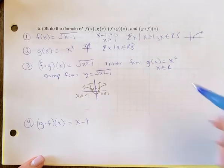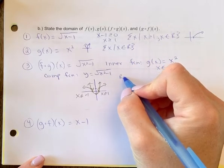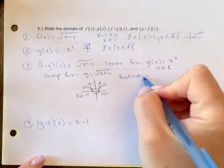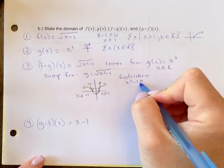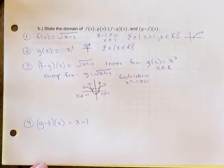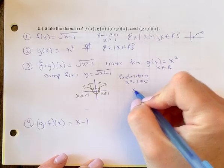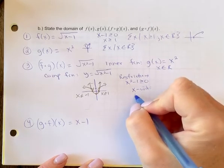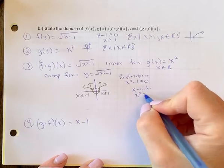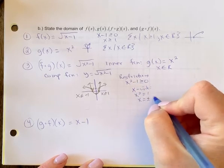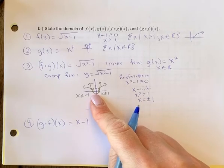You could also find this algebraically by looking at the restrictions. And so x squared minus 1 is greater than or equal to 0. So remember, to solve for a quadratic inequality, you would need to consider where the x-intercepts are. So x squared, if you move that 1 over, would equal 1. x would equal plus or minus 1, which we know from graphing this too.